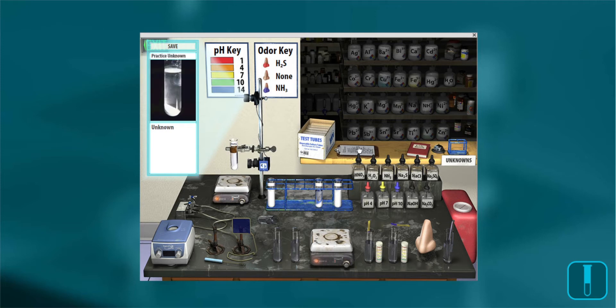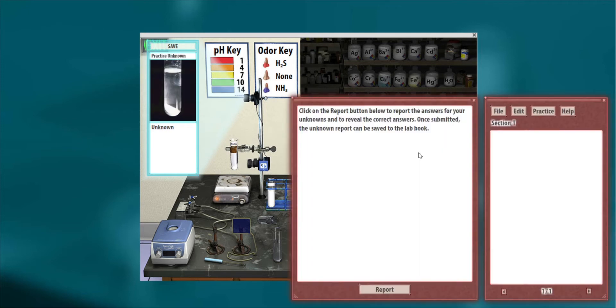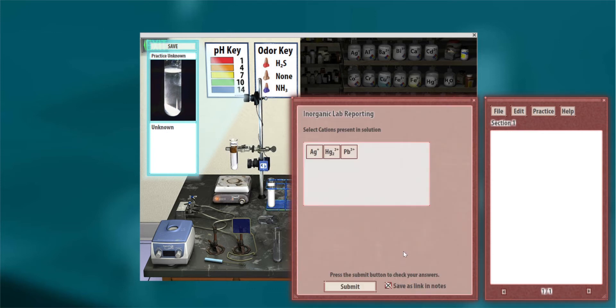They can enter their lab book and report what they think they have. Say they guess lead and silver and submit. They get one green box, but the other boxes weren't correct, so they need to go back into the lab and test that unknown again.